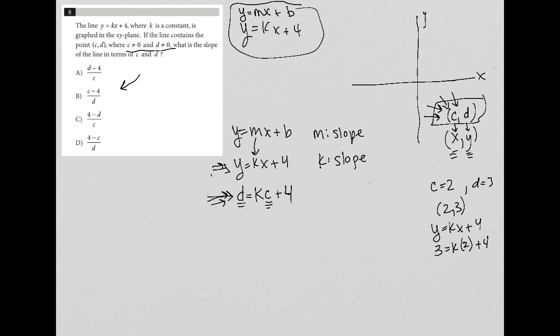Because I want to solve for k, I am going to isolate k, so I'm going to subtract 4 from both sides, so I'm left with d minus 4 equals kc, and then I'm going to divide both sides by c.